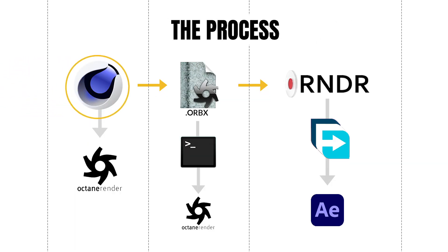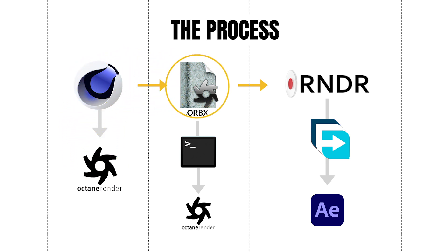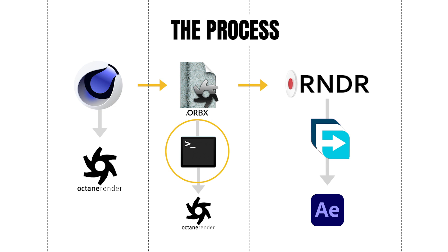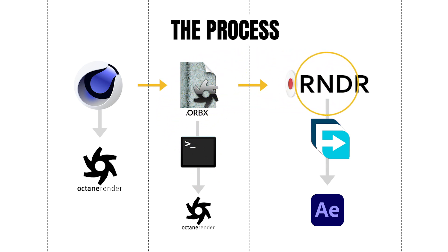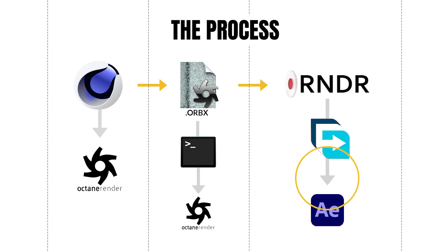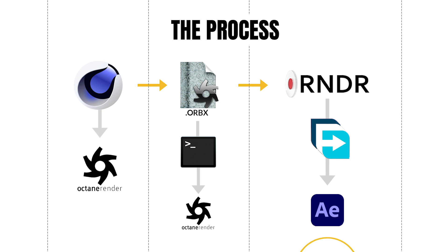So the process: you need to start with your Cinema 4D file or any 3D animation software that can use Octane with the Octane plugin. You then want to create an Orbex file. Using Cinema 4D there is a bit of a bug, so I'll show you a workaround using the terminal. You'll then check your Orbex file using the standalone plugin, upload it to R&DR, and then download the files. There's a workaround for downloading too. Then you take everything into post-processing software like After Effects. There are a lot of steps — please stay with me.